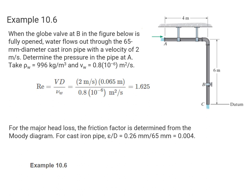Let's take a look at example 10.6 and apply this. We have a situation where a globe valve at B is fully open. Water flows out through the 65 millimeter diameter cast pipe with a velocity of 2 meters per second. Determine the pressure in the pipe at A. The density of the water is 996 kilograms per cubic meter.